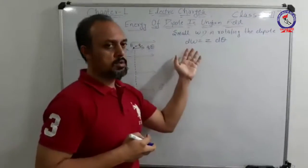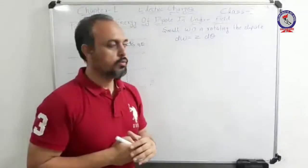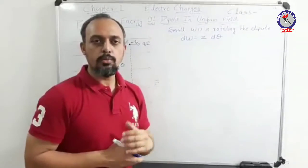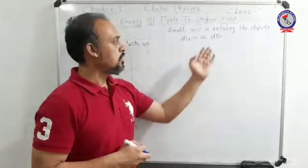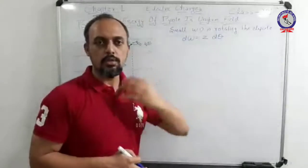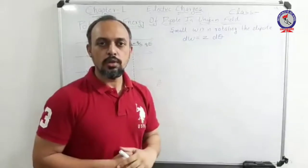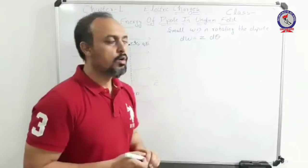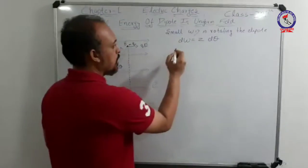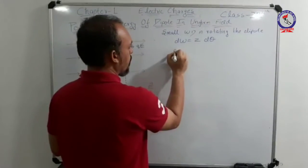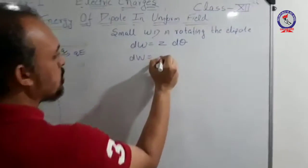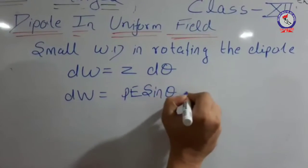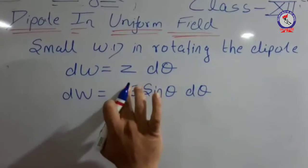Here, dW represents the small magnitude of work done, tau represents the torque acting on the dipole which is Pe sinθ, and dθ represents the range of that particular angle in which you are rotating the dipole. Moving on to carry out the derivation: dW equals Pe sinθ dθ.